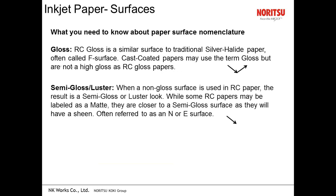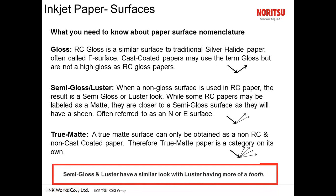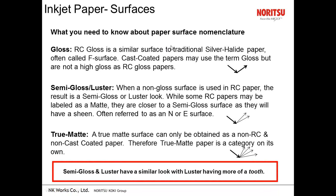Paper finishes include glossy, semi-gloss (similar to luster but with slightly more sheen), and true matte, which has very little sheen. The difference is simply the manner in which they reflect light. Semi-gloss and luster look very similar; semi-gloss has just a bit more sheen, while luster has a little more tooth. True matte has very little sheen and scatters light significantly more.